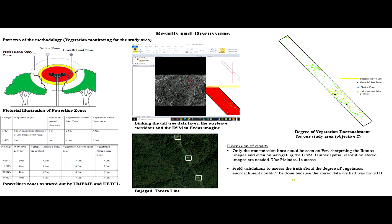Discussion of results: As I said, even if I did pan sharpening—this one is after pan sharpening—only the transmission lines could be seen.